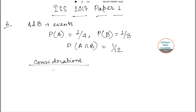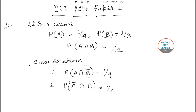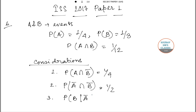The considerations are: one — probability of A intersection B bar equals one by two; and three — probability of B given A bar equals one by three. We are asked which of these statements is correct.